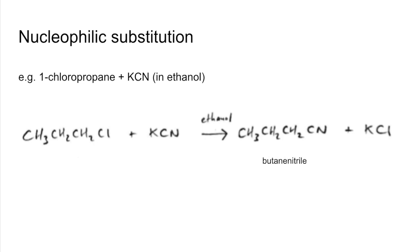The final mechanism is nucleophilic substitution. The example is 1-chloropropane with KCN, which needs to be in ethanol. You can see it's a straightforward substitution reaction where the chlorine is substituted with the CN group, giving butanenitrile - a nitrile. Again, the important thing is we've extended that carbon chain by one, going from three carbons to four.